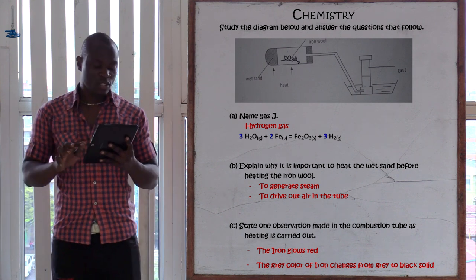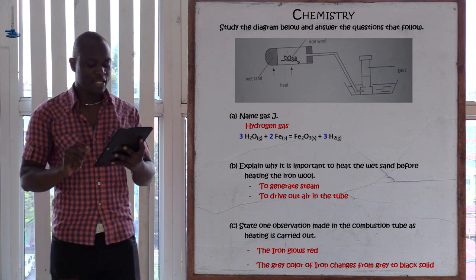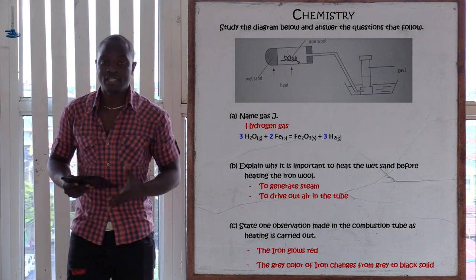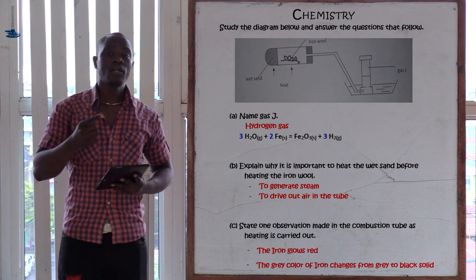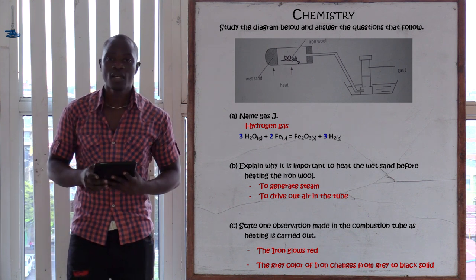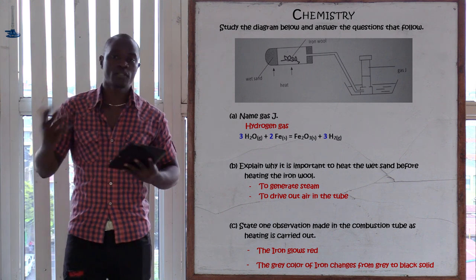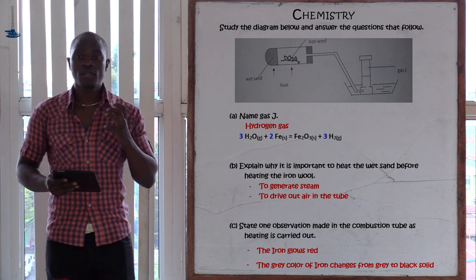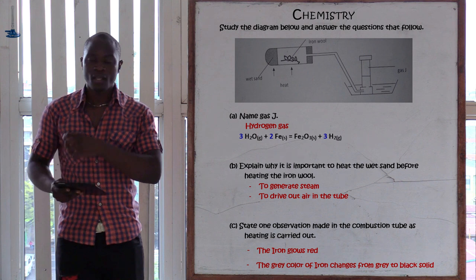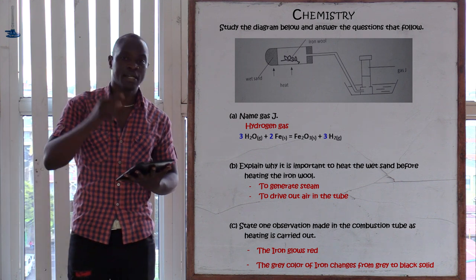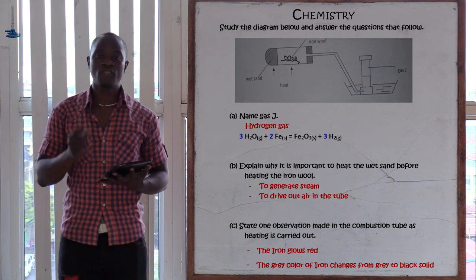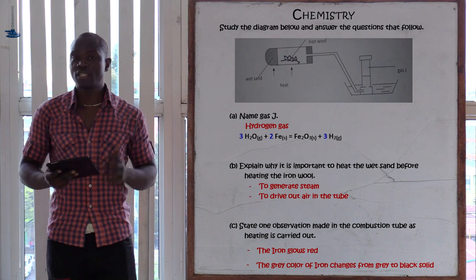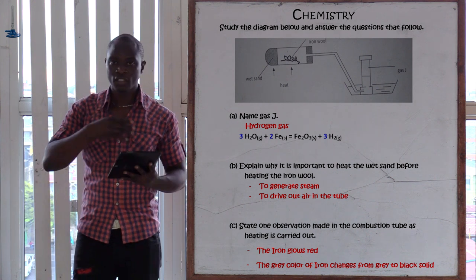The next question asks: state the observations made in the combustion tube as heating is carried out. The first observation is that the iron glows red in color. The second observation is that the color of the iron changed from gray to black. That black color indicates that iron(III) oxide was formed — iron is gray in color, while iron(III) oxide is black in color.